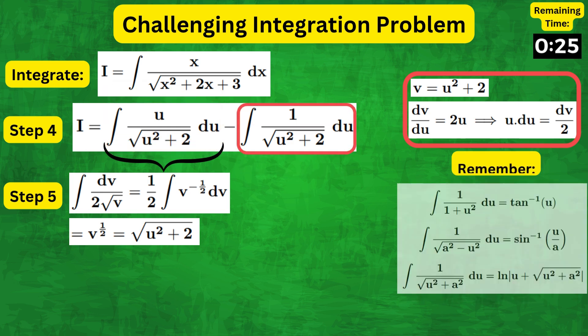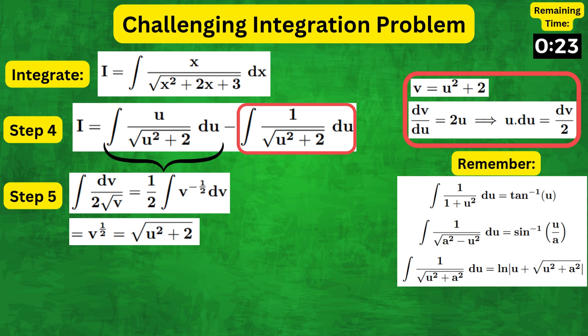And for this second integral, we need to recognize that it is of the form 1 over square root of u squared plus a squared, with a equals root 2, which integrates out as follows.